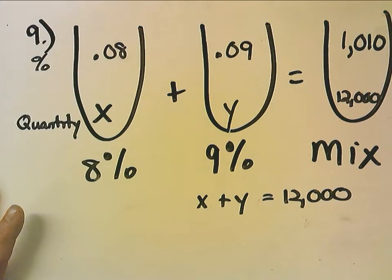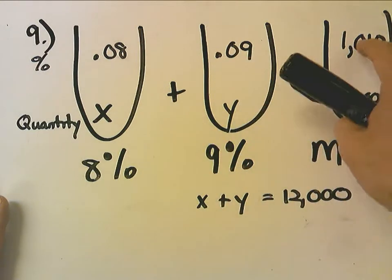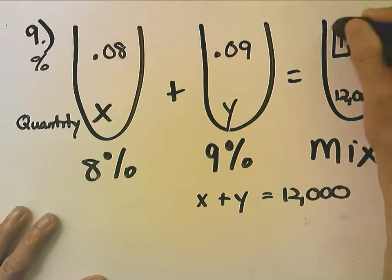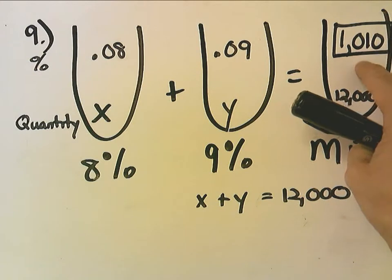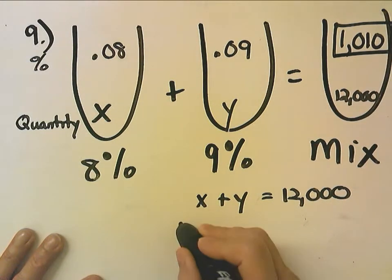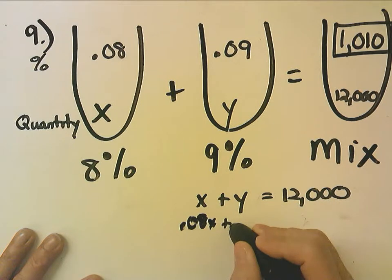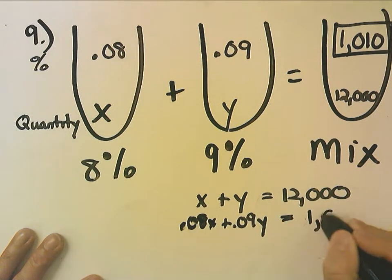So obviously $1,010 is not in between 8% and 9%. It is not a percent. So just like with some of the dry mixture problems, we don't always say this times this plus this times this equals this times this. Sometimes this number here is a total. And in all of the investment problems, they only give you a total.